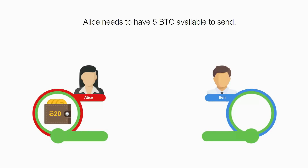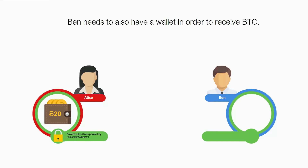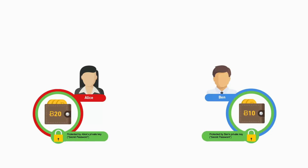Alice does have bitcoins — she has a wallet and that wallet has 20 bitcoins available. Just as importantly, Alice has access to the private key corresponding to those 20 bitcoins and that wallet. Because she has access to the private key, which she does not share with anybody, she is able to authorize a transfer of bitcoins to someone else. In order for Alice to send the bitcoins to Ben, Ben needs to also have a wallet. He does have a wallet and also has the private key corresponding to that wallet, which would enable Ben to do future transactions.